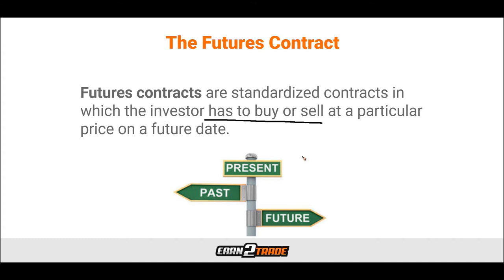If you had bought a futures contract to purchase an asset in 30 days, you could alternatively buy another futures contract to sell the same asset in 30 days as well. If the price of both contracts are the same, there will be no impact on the overall position and you have effectively closed your position.